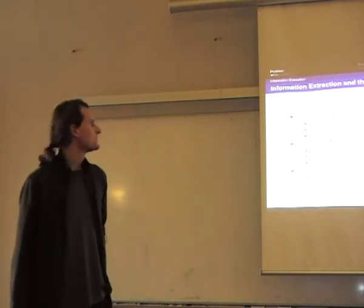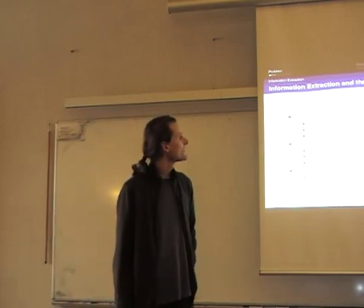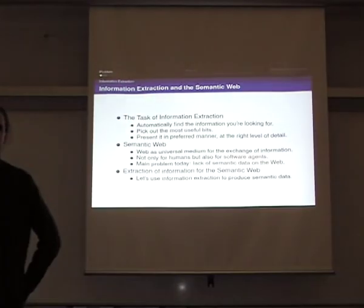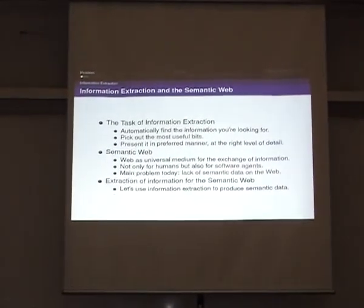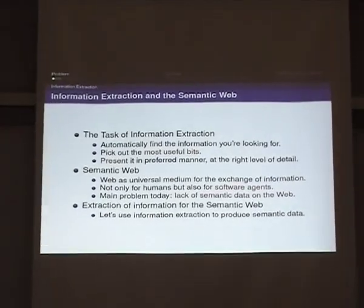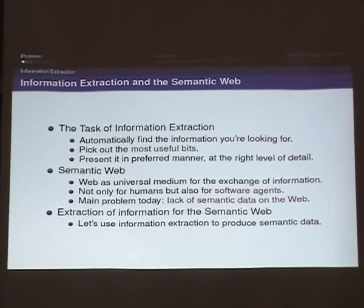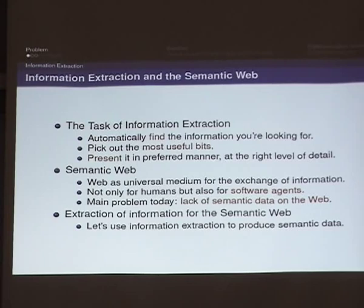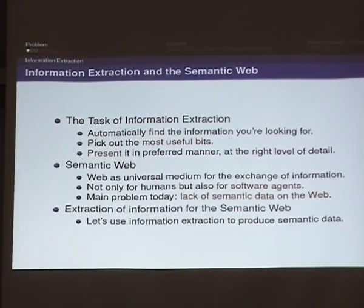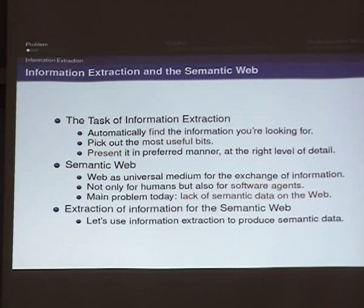The task of information extraction is basically to find information in text, to pick the most useful bits and present them at the right level of detail. On the other hand, the semantic web should be a medium for exchange of information not only for humans like the contemporary web, but rather for software agents which should understand the content and integrate these data automatically.